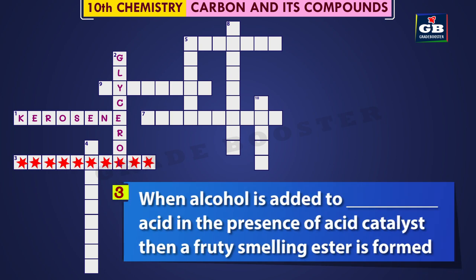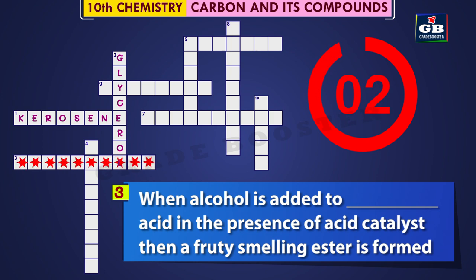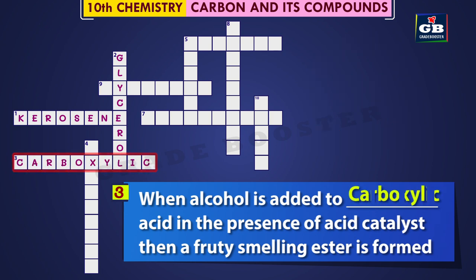3 Across: When alcohol is added to dash acid in the presence of an acid catalyst, then a fruity smelling ester is formed. What is that acid? The answer is carboxylic acid. When alcohol is added to carboxylic acid in the presence of acid catalyst, then a fruity smelling ester is formed.